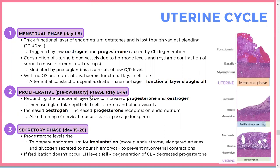The proliferative phase — also called the pre-ovulatory phase — runs from the end of the period to ovulation. The functional layer is rebuilt. Estrogen from follicles increases the number of progesterone receptors in the endometrium, making it more receptive to the progesterone available. There's also thinning of the cervical mucus, making it easier for sperm to pass.